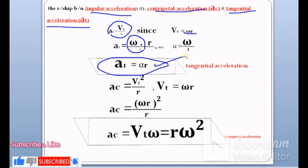For centripetal acceleration, ac = v²/r. Since v = ωr, we can write ac = (ωr)²/r. Simplifying, ac = ω²r²/r = rω². This is the relationship for centripetal acceleration.